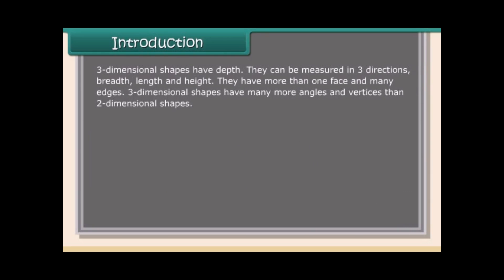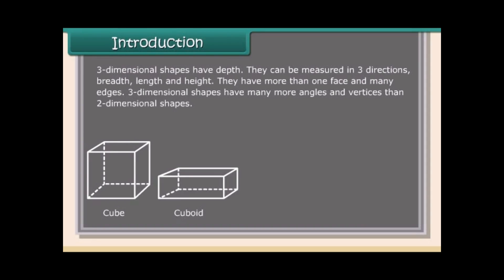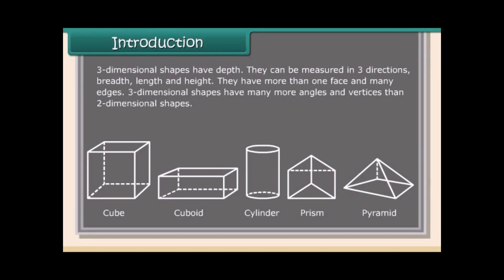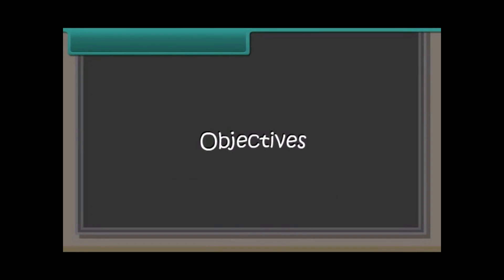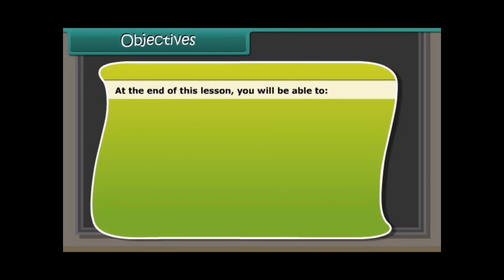Three-dimensional shapes have depth. They can be measured in three directions: breadth, length, and height. They have more than one face and many edges. Three-dimensional shapes have many more angles and vertices than two-dimensional shapes, such as cube, cuboid, cylinder, prism, pyramid, etc.